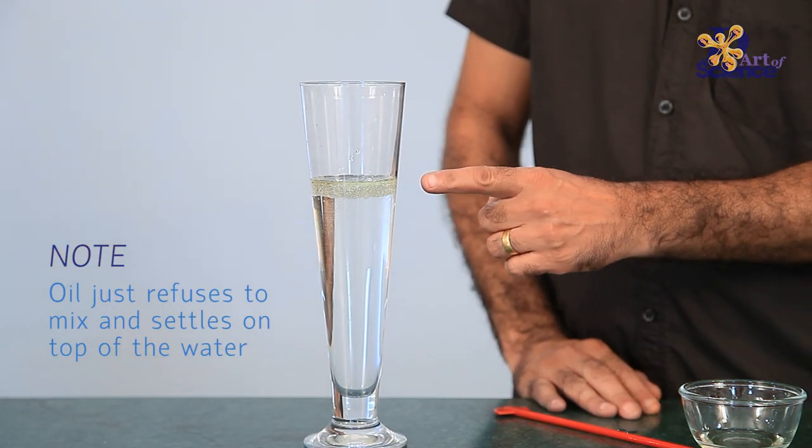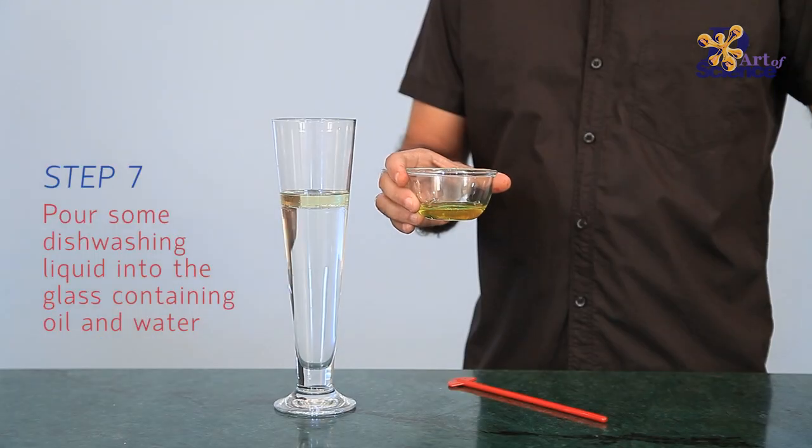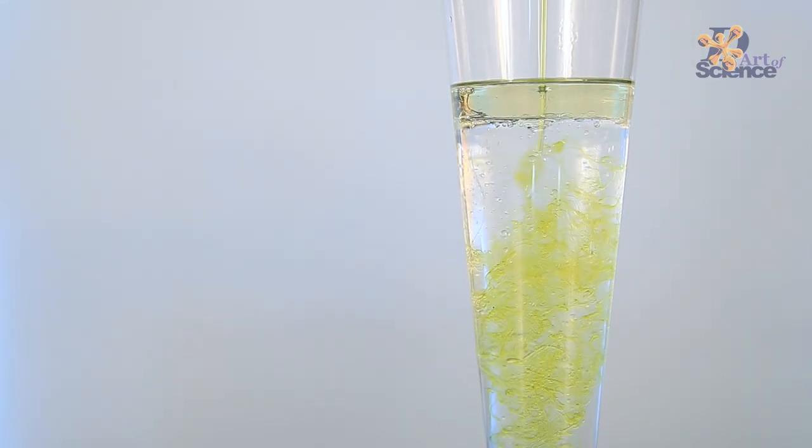Detergents and soaps have both hydrophobic and hydrophilic properties and they use this property to remove oil and dirt from the clothes. That's why they are known as emulsifiers.